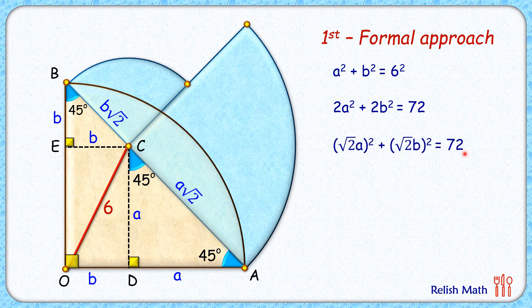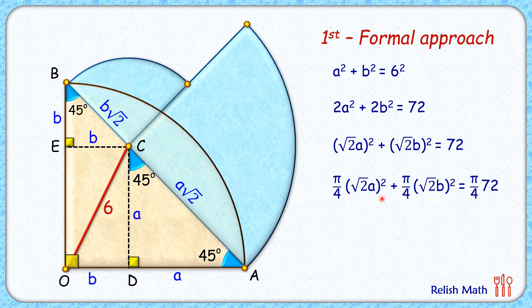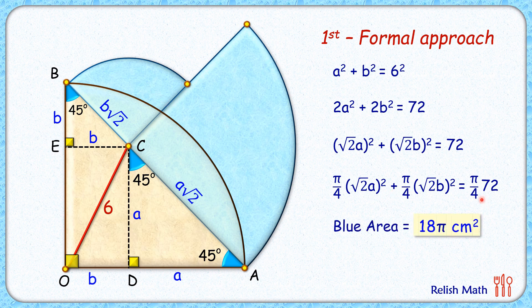Multiplying the full equation by π/4, we get an equation where the first term represents the area of the big blue quadrant and the second term represents the area of the smaller blue quadrant. The full left-hand side represents the total blue area, which equals 18π centimeters squared — and that's our answer.